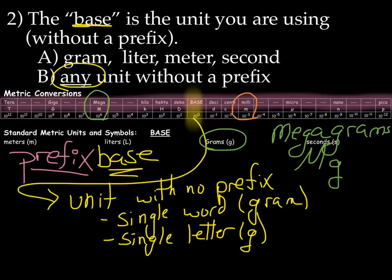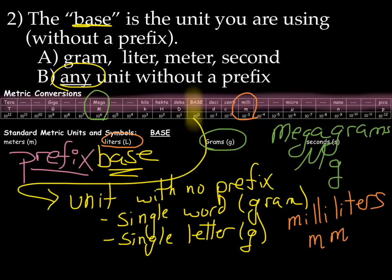Let's try one more. We've got something in the milliliters area. We could write that as milliliters, or we could write it as abbreviated small m for milli and capital L for liters, milliliters. Those both say milliliters.